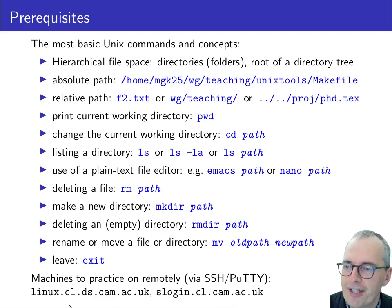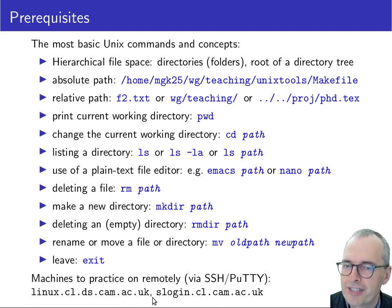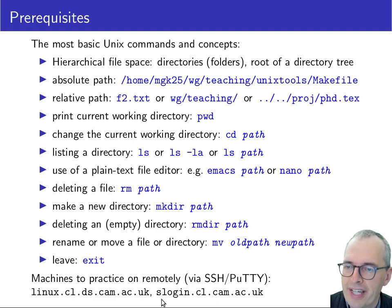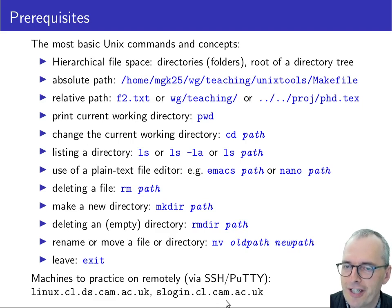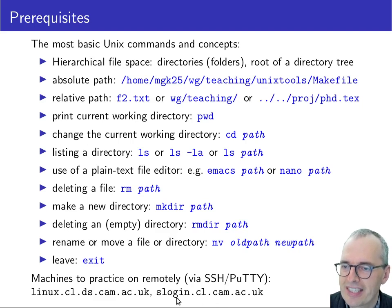If you are an undergraduate student, there is a linux.cl.ds.cam.ac.uk machine that is a remotely reachable server version of the Linux MCS machines offered in the Intel lab. If you are a research student, you also have access to the remote login servers - the slogin machines the department offers. These machines require the UIS password, whereas others require you to first obtain a Kerberos ticket with your departmental password. For details on accessing these machines, please refer to the Computer Laboratory webpages.